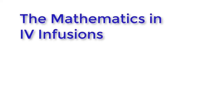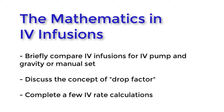This video will be comparing the mathematics involved in IV infusion situations. More specifically, I will briefly compare IV infusions administered via an IV pump and those infusions administered with gravity, also referred to as manual sets. We will also discuss the concept of the drop factor, which refers to the calibration of the tubing used in gravity infusions, and we will end with a few examples of IV rate calculations.